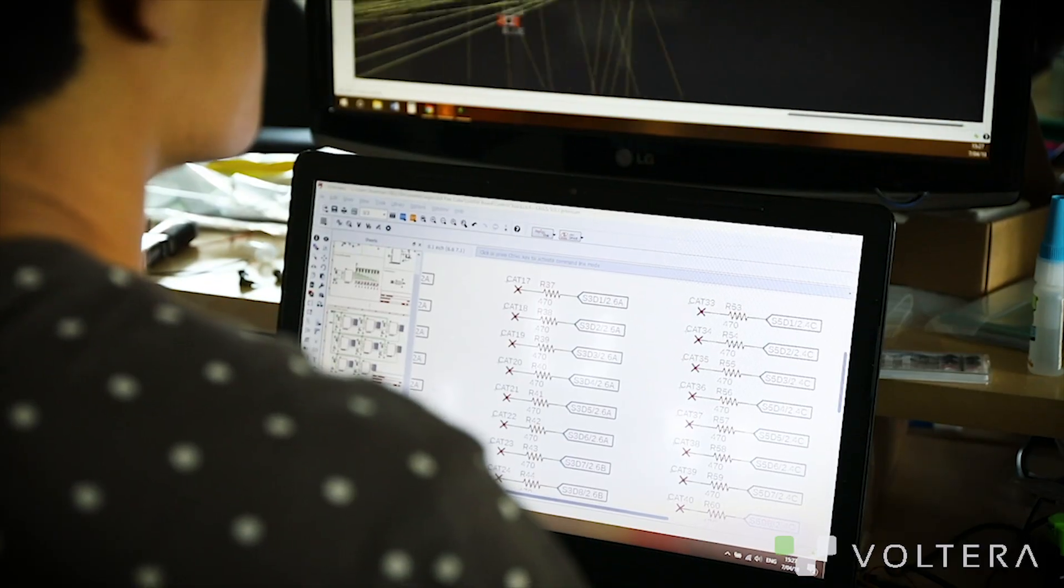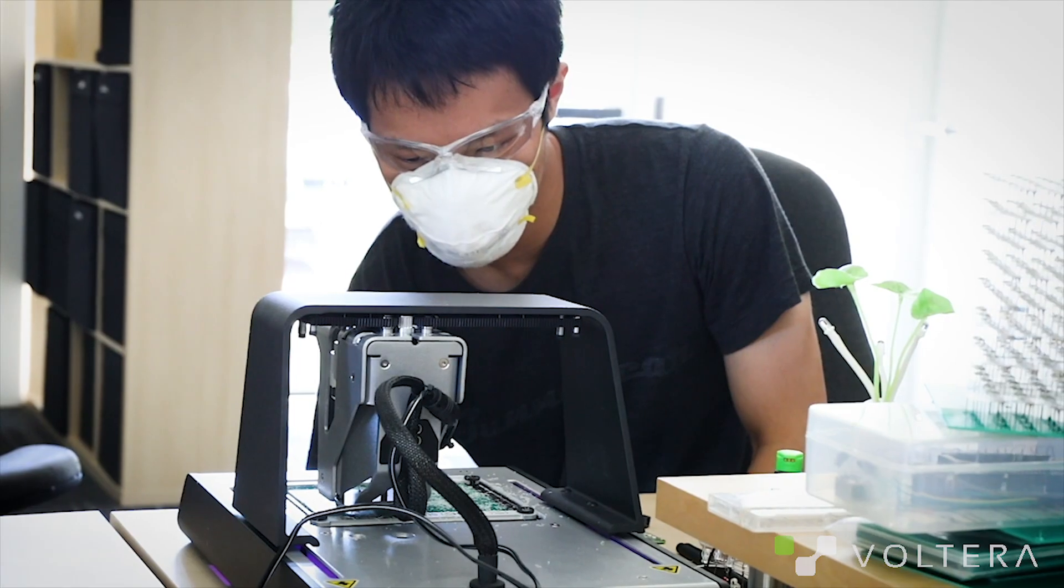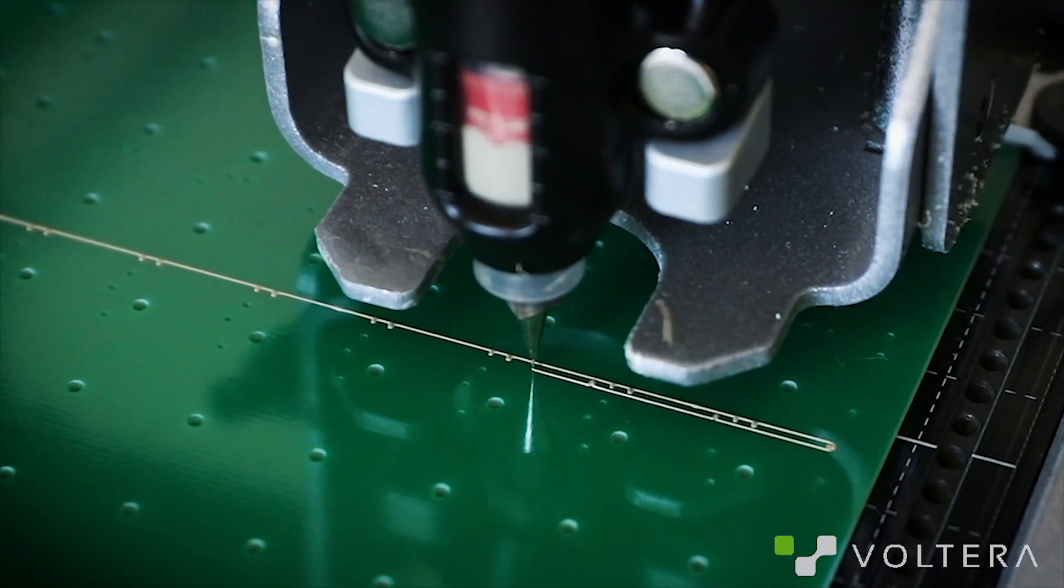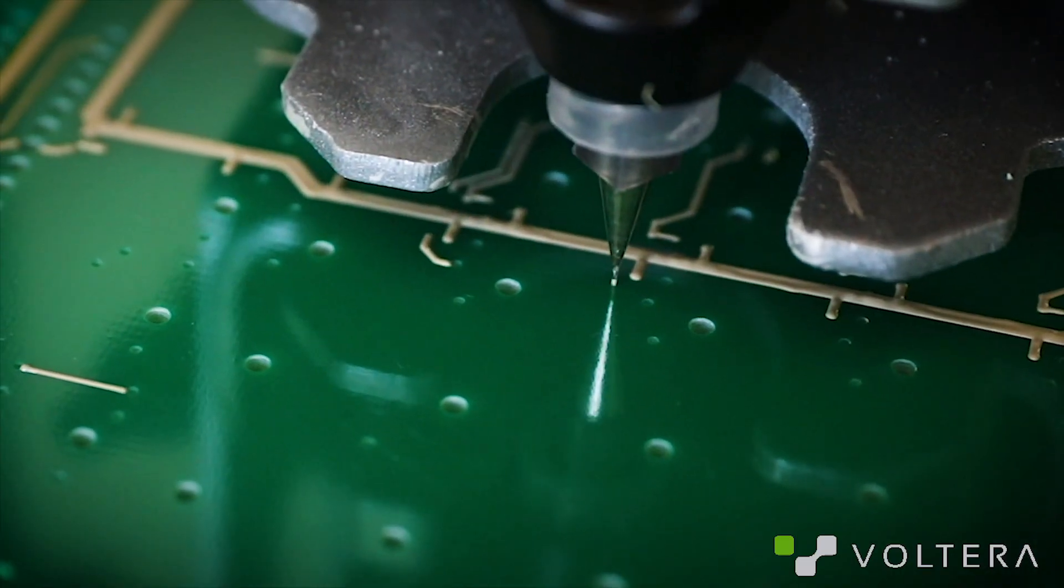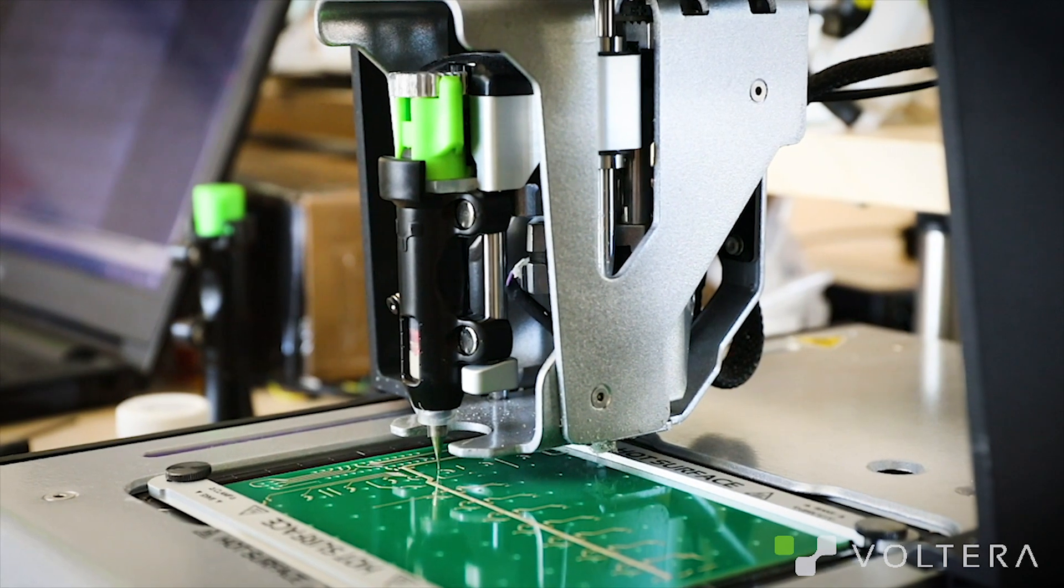Instead of using normal through-hole LEDs like most people do when they make an LED cube, I used surface-mounted LEDs that were reflow-soldered onto layers of transparent PET, which would normally be either impossible or very difficult.